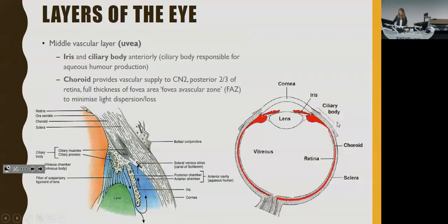The middle vascular layer: the iris and ciliary body are at the front. The ciliary body is important because it produces aqueous humour, which is the fluid that fills the front part of the eye. Everywhere else is the choroid, which provides vascular supply to the posterior two-thirds of the retina and the full thickness of the fovea area. The fovea is the central dip in the macula — the most specialized area for high acuity color vision — and the vascular supply comes from underneath, so it doesn't disrupt the light rays.